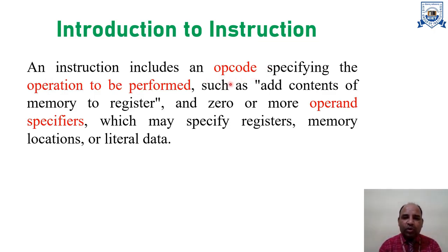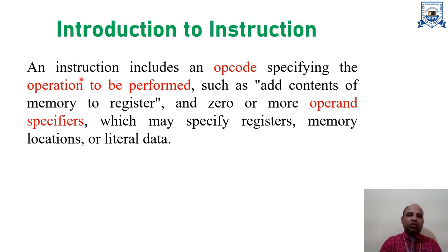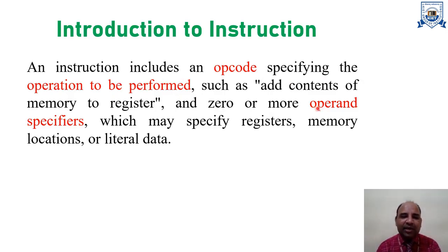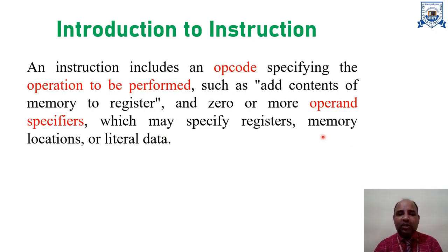One is the opcode, which is called the operation code, and another is the operands, which is the data on which the opcode is going to be performed inside that instruction. So in a nutshell, an instruction is made up of two parts: the opcode — what operation you have to perform — and the operands — on which data you want to perform that operation. An operand may be zero, meaning there is no operand, or it may have one or more operands which may specify register content, memory location, or literal data from input devices.